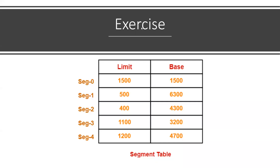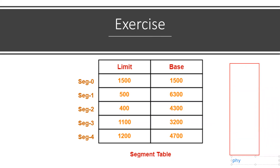Very simple. For example, this is physical memory. Here we can see physical memory. The base addresses — the particular program is divided into different segments. Base addresses range from less than 1500 and maximum 6300. So here we can adjust, for example, 1500.